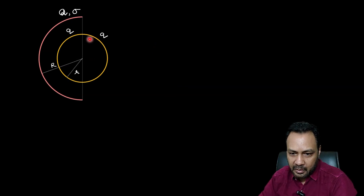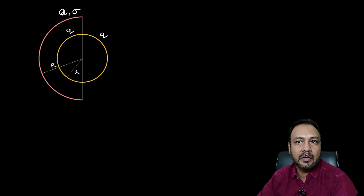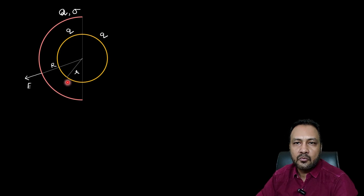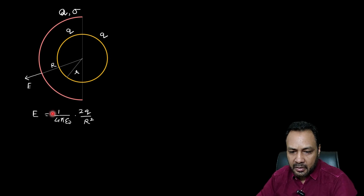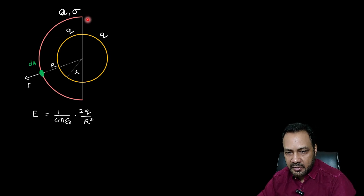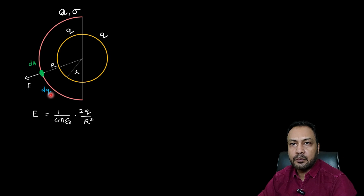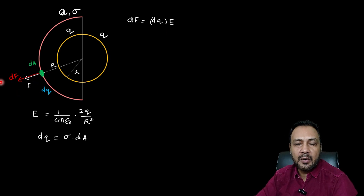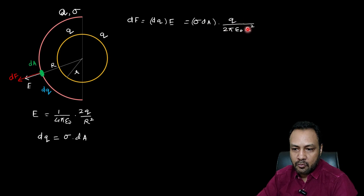I will find the force on the bigger hemispherical shell (pink) due to the smaller shell (yellow). At a general point on the bigger shell, the electric field is due to both halves: since each half has charge Q, the total charge is 2Q, and the electric field there is E = K·2Q / R². Taking a small area element dA on the bigger shell, the surface charge density is sigma, so dQ = sigma·dA, and dF = dQ · E = sigma·dA · Q/(2π ε₀ R²).